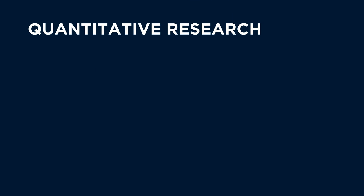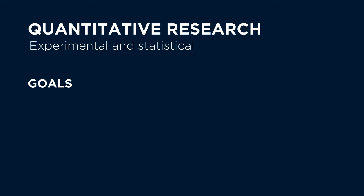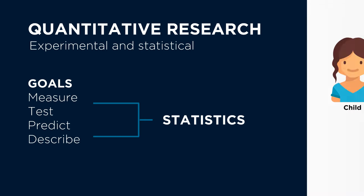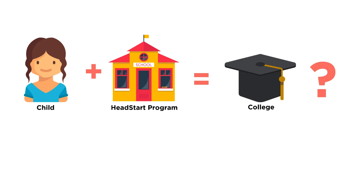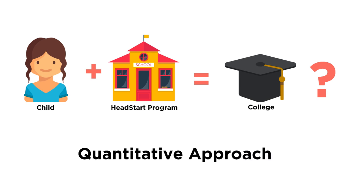Let's start by comparing the goals of quantitative and qualitative approaches. When you think quantitative, think experimental and statistical. The goal here is to measure, test, predict, and describe using statistics. If you conduct a statistical analysis of the correlation between a child's participation in a Head Start program and their likelihood of going to college, you're taking a quantitative approach.